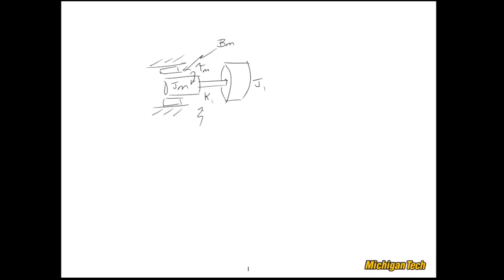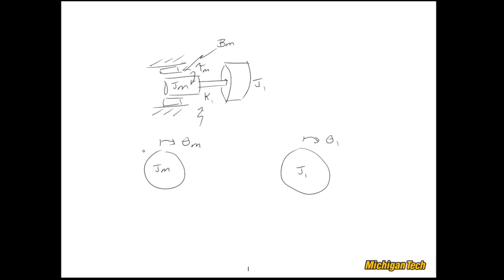With that brief overview, let's go ahead and abstract our free body diagrams, just with a couple of circles — one representing the disk Jm, and the other one the disk with inertia J1. I'm going to somewhat arbitrarily specify these directions as being our positive rotations. As soon as I do that, I can apply my inertial moments in the opposite direction.